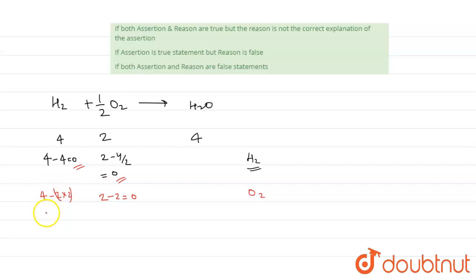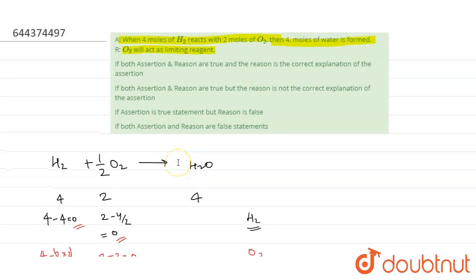So then it will become 4 minus 4, that is equals to 0. So here again we can see that none of them is limiting reagent. So that's why we can conclude from this that both of them are getting consumed simultaneously.